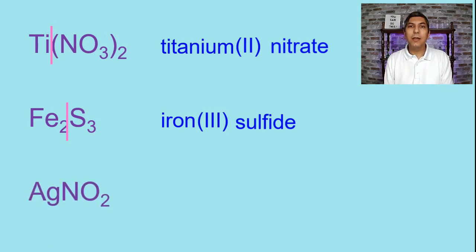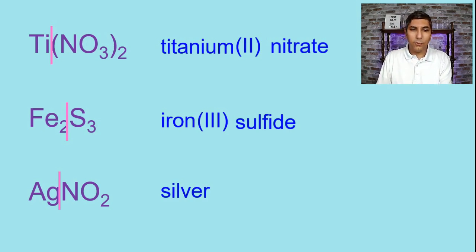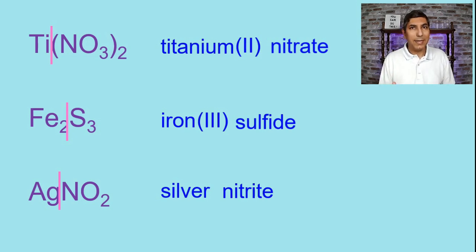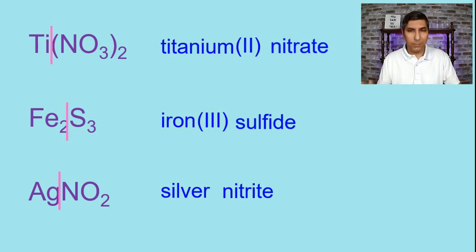Let's try AgNO2. Split this down the middle. Ag is the symbol for silver, and NO2 is a polyatomic ion — that's the formula for nitrite. So the name is silver nitrite. Silver is a transition metal, but we're not going to put a Roman numeral here because silver is one of those exceptions. Silver, zinc, and cadmium don't need a Roman numeral — silver is always plus 1, so it's fine to just call this silver nitrite.